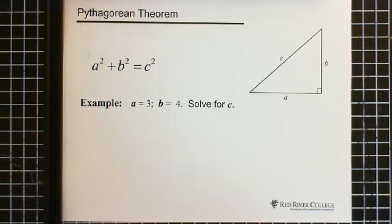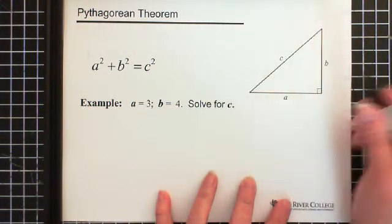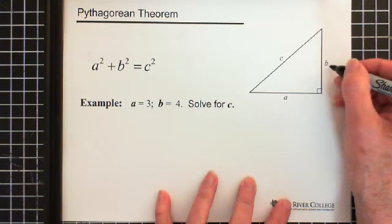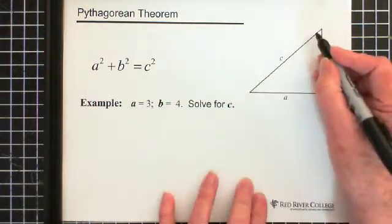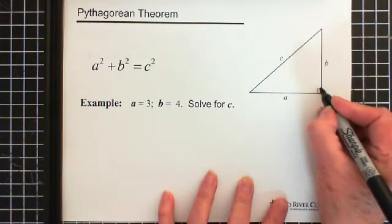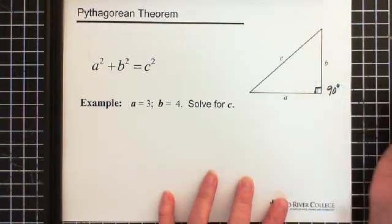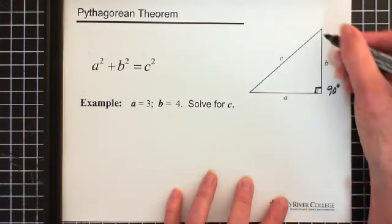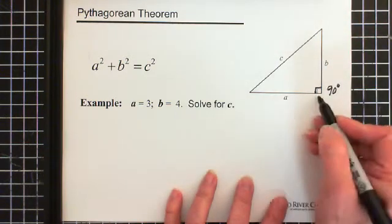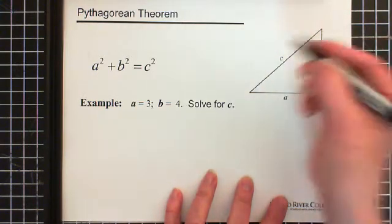Now the Pythagorean Theorem states that when you have a right angle triangle, the square of one side plus the square of a second side equals the square of the hypotenuse. So in a right angle triangle, first of all, we have one angle that's called the right angle and it is 90 degrees. That's what makes this a right angle triangle. The two sides that are connected to the right angle are the two short sides. The long side is called the hypotenuse.